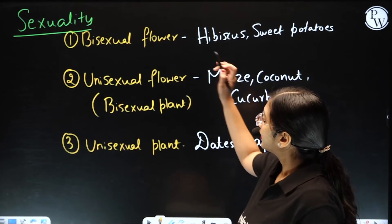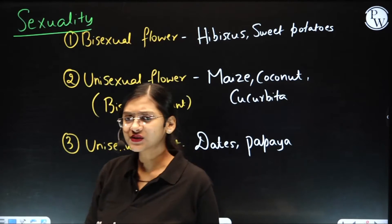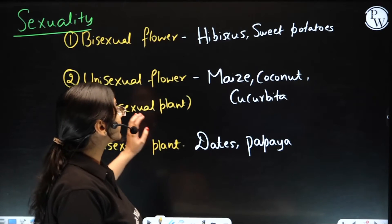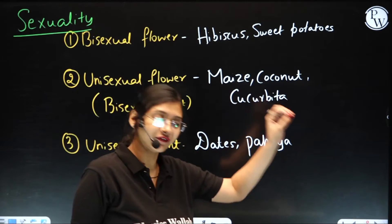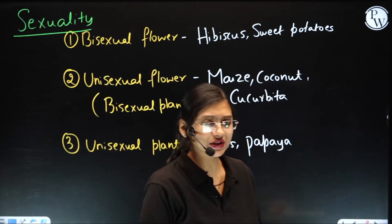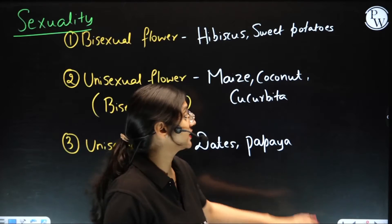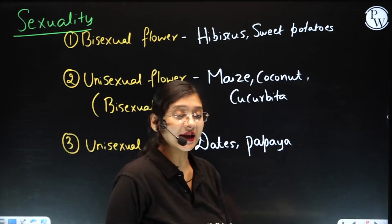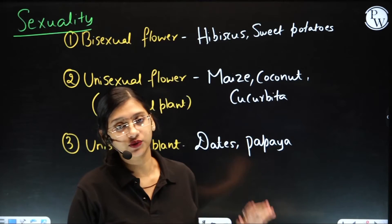So let's start with bisexual flowers, which is sort of easy. So some of the examples for bisexual flowers, which actually makes the plant bisexual as well — the examples are hibiscus and sweet potatoes.